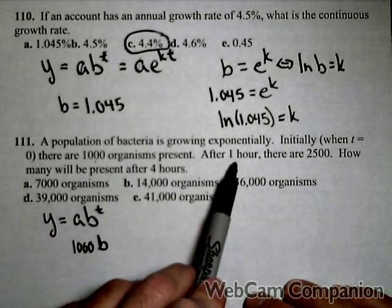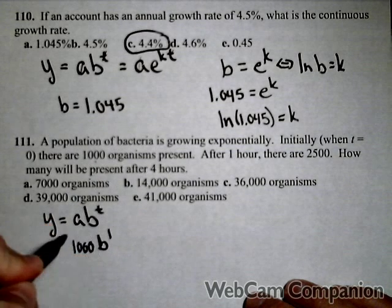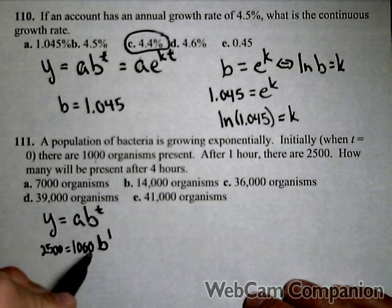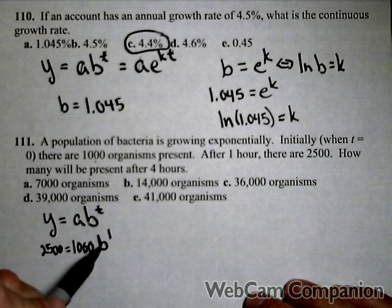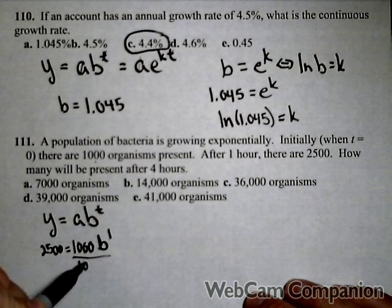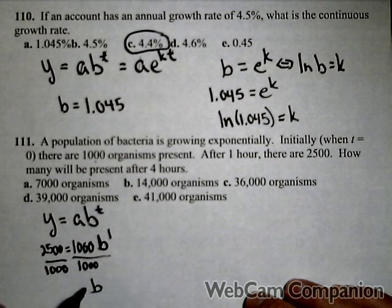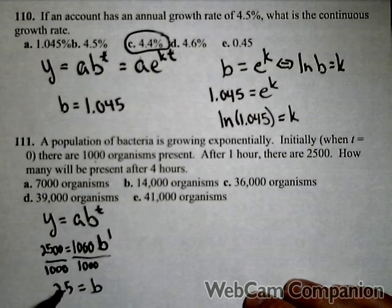Well, I know that after one hour, there'll be 2,500. That is enough information to solve for B, because B to the one is just B, so I'm going to divide both sides by 1,000. And I get that B equals 2.5.